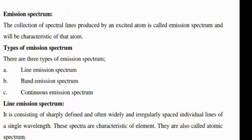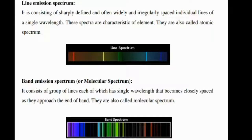line emission spectrum, band emission spectrum, and continuous emission spectrum. Line emission spectrum consists of sharply defined and often widely and irregularly spaced individual lines of a single wavelength. These spectra are characteristic of elements, also called atomic spectrum. You can see here clearly a picture of the line emission spectrum.